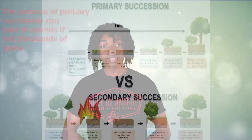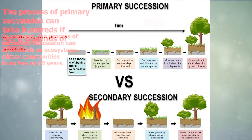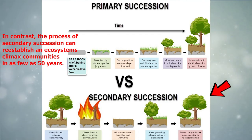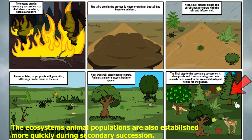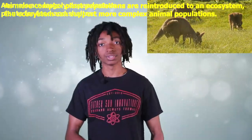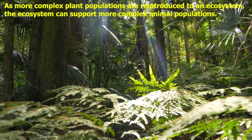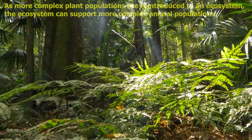The process of primary succession can take hundreds if not thousands of years. In contrast, the process of secondary succession can reestablish an ecosystem's climax communities in as few as 50 years. Animal populations are established more quickly during secondary succession. Animals are largely dependent on plants for food and shelter. As more complex plant populations are reintroduced into the ecosystem, the ecosystem can support more complex animal populations.